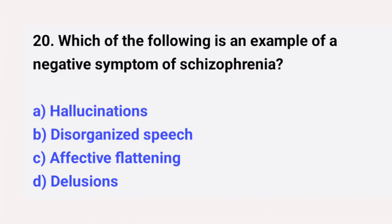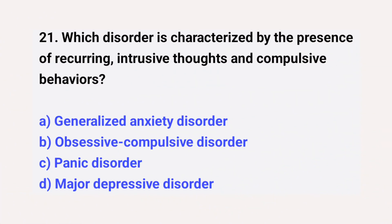Question number twenty: which of the following is an example of a negative symptom of schizophrenia? The right answer is option C: affective flattening. Question number twenty-one: which disorder is characterized by the presence of recurring intrusive thoughts and compulsive behaviors? The right answer is option B: obsessive-compulsive disorder.